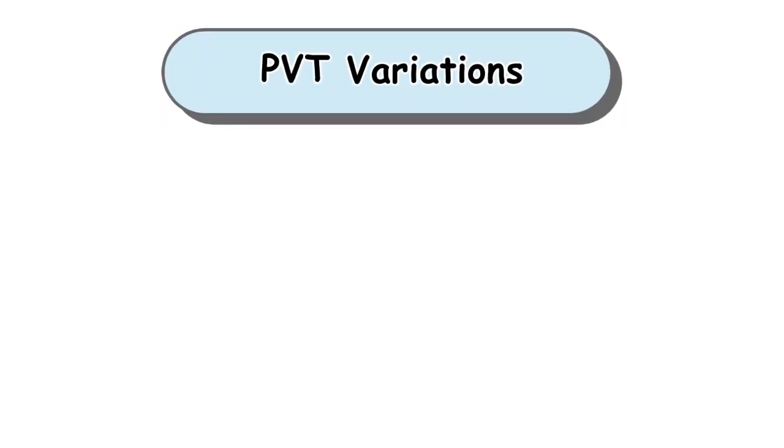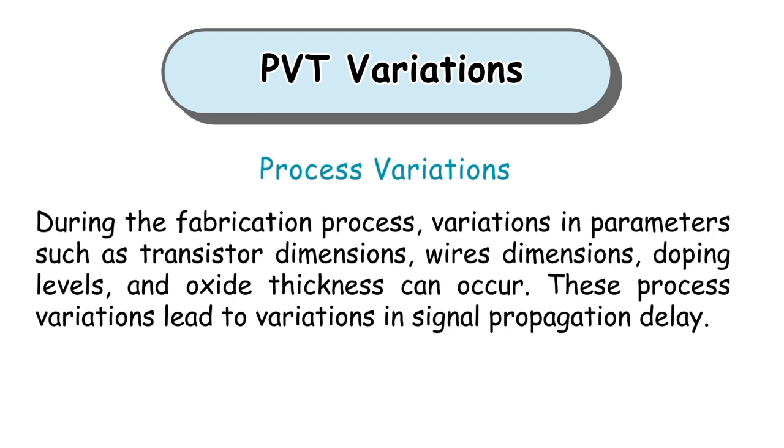Now let's see the PVT variations effect on signal propagation speed and therefore affect the clock skew. First, process variations. During the fabrication process, variations in parameters such as transistor dimensions, wire dimensions, doping levels, and oxide thickness can occur. These process variations lead to variations in signal propagation delay.